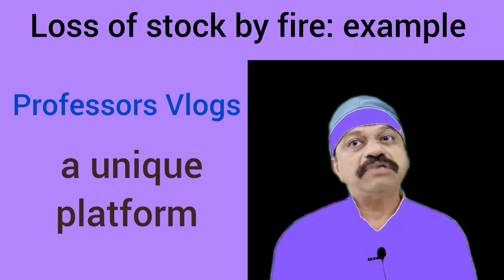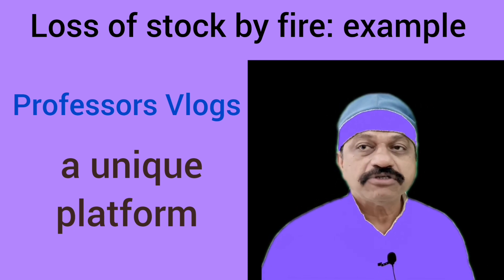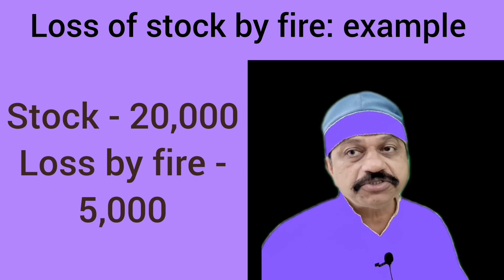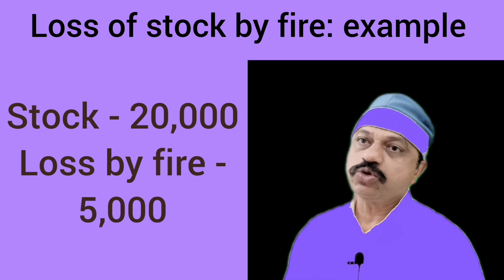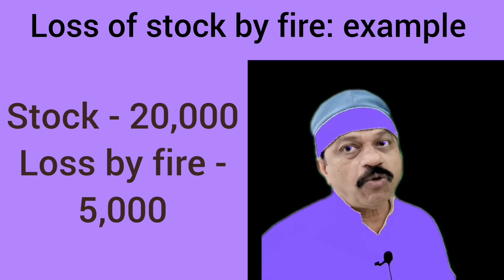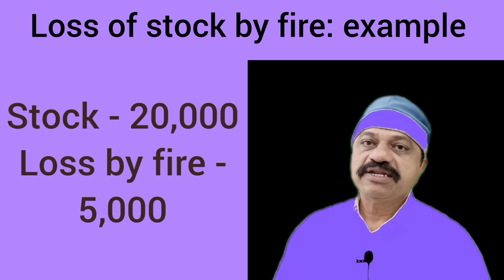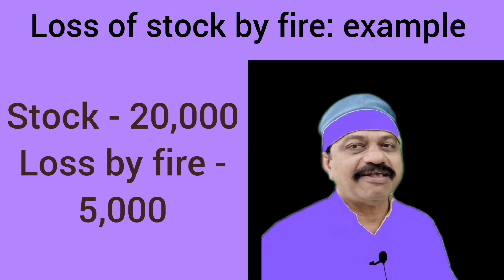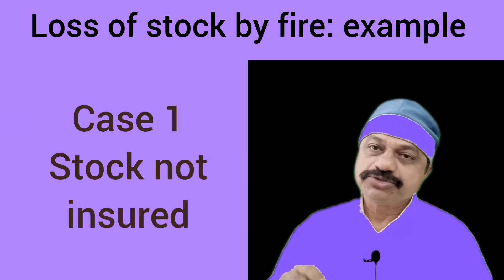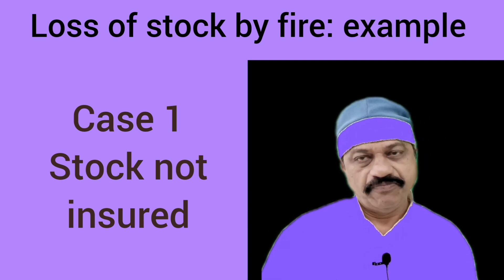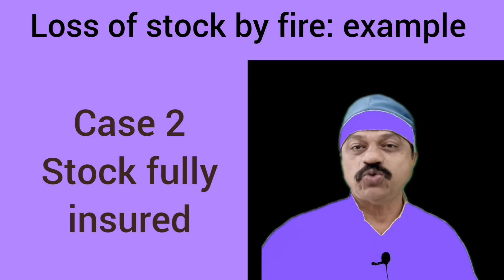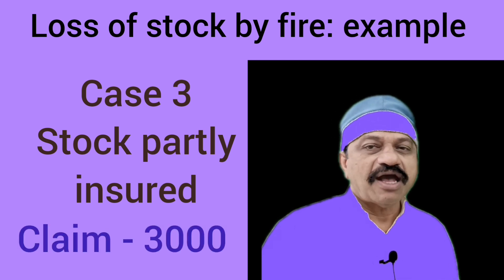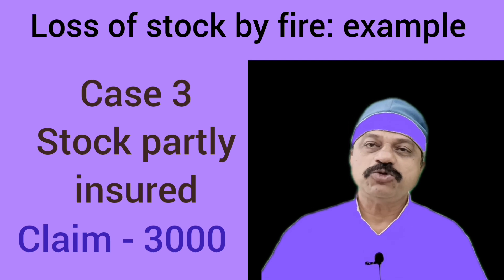We are going to analyze today a very good example of stock destroyed by fire. Suppose the closing stock on 31st December 2022 was Rs. 20,000. There was a loss by fire of Rs. 5,000 on 10th November 2022. We have to explain the accounting treatment under three cases. Case 1: stock was not at all insured. Case 2: stock was fully insured. Case 3: stock was partly insured.